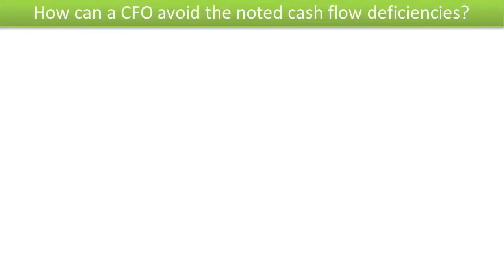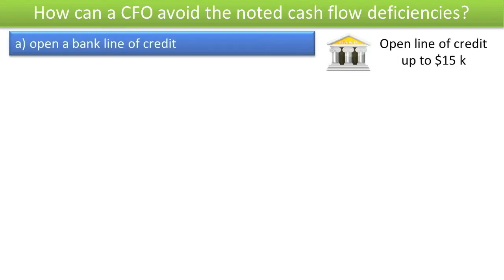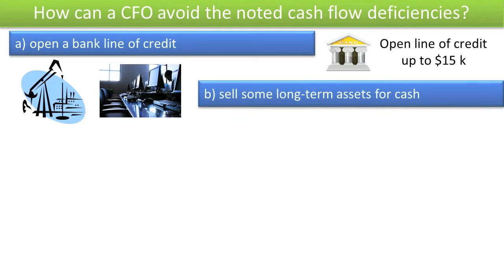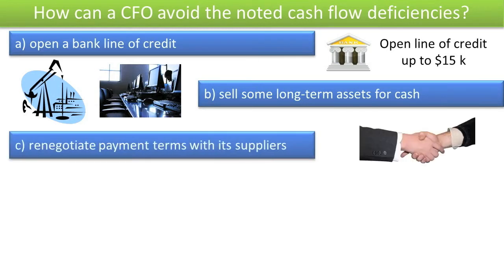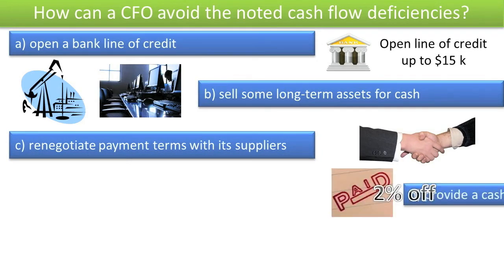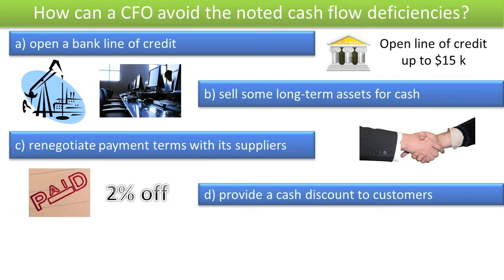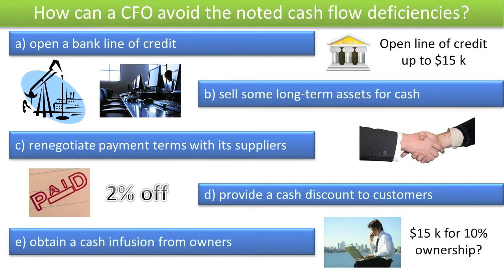One of a chief financial officer's (CFO's) responsibilities is to recognize future cash flow deficiencies and put plans in place to avoid them. Steps LAC's CFO could take include: opening a bank line of credit to provide at least $15,000 in short-term financing; selling some of LAC's long-term assets for cash, especially if they are not generating income; renegotiating payment terms with suppliers to allow later payments; providing customers a 2% discount if they pay within 10 days; or obtaining a cash infusion from LAC's owners in exchange for additional equity.